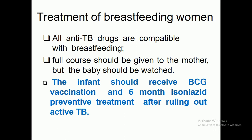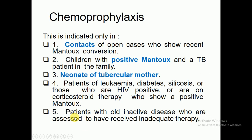For breastfeeding women, all anti-tubercular drugs are compatible with breastfeeding and a full course should be given to the mother. The infant should be watched and should receive BCG (Bacillus Calmette–Guérin) vaccination and six months of isoniazid preventive treatment after ruling out active TB.